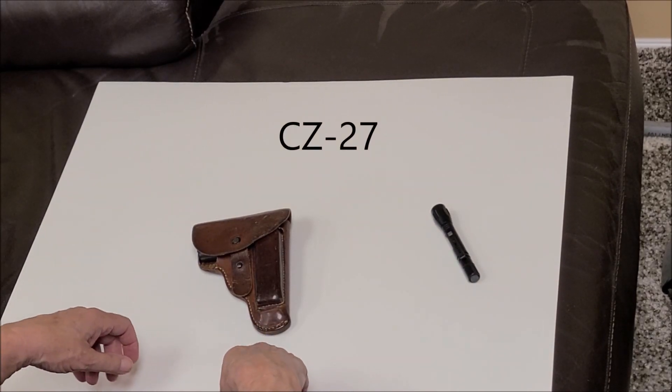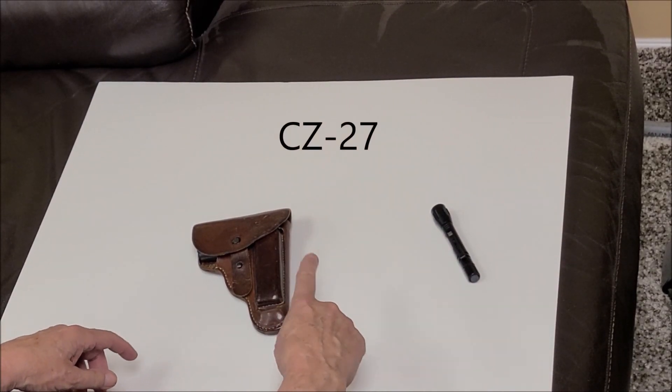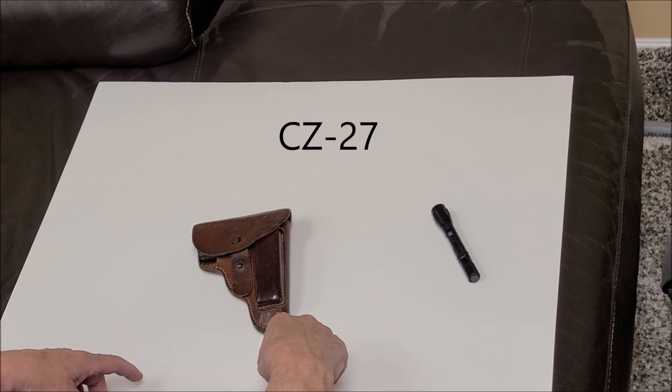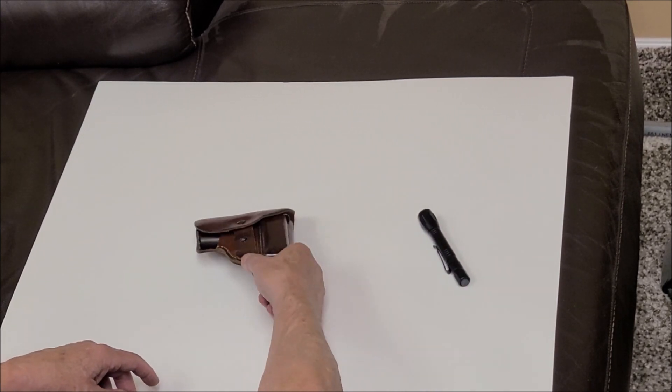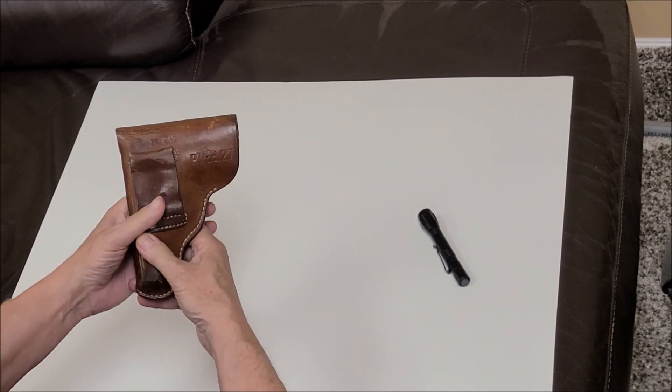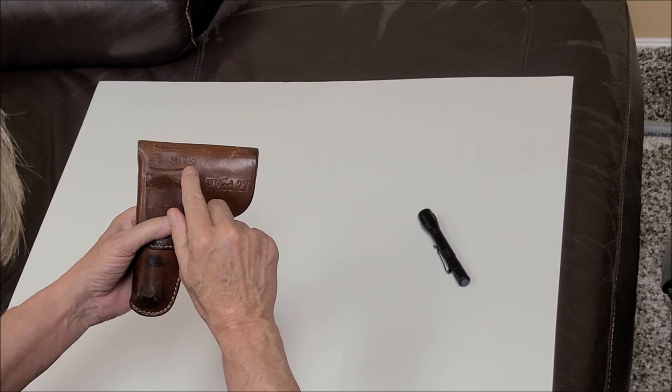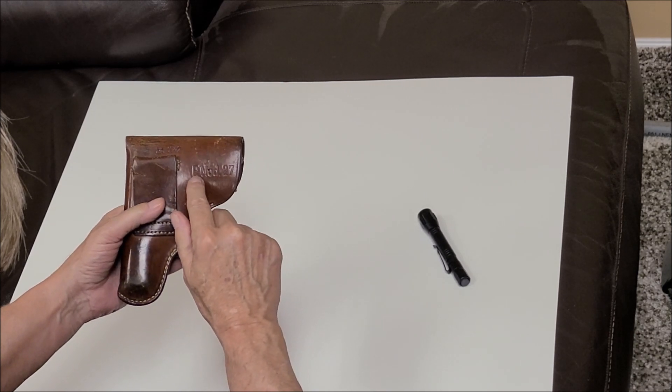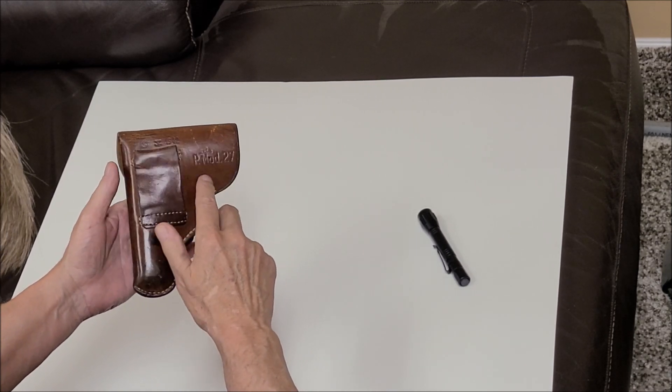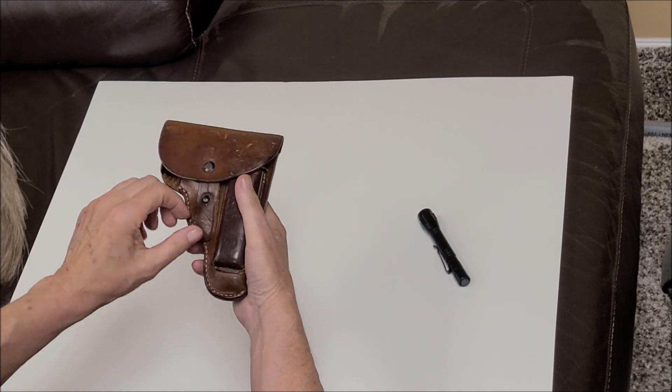Hello YouTube fans, we've got something rare, at least for me in the milsurp world. What we have here is a CZ with German markings, 1942 holster, P Model 27 pistol.